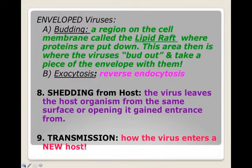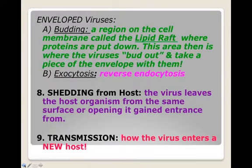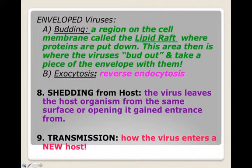The last two concepts concern the virus inside a host organism rather than inside a single cell. Shedding is when the virus leaves the host organism from the same surface or opening it used to enter. Respiratory viruses enter through the respiratory tract and are shed the same way. Enteric viruses follow the fecal-oral route — ingested from contaminated feces and shed back out through feces. Transmission is how the virus enters a new host, whether through direct or indirect contact, and we'll discuss that more in the next unit.